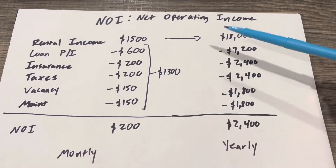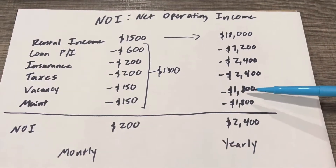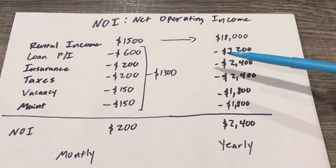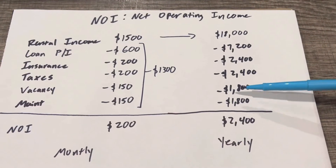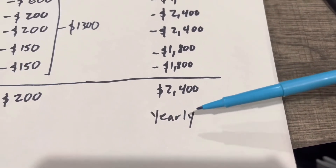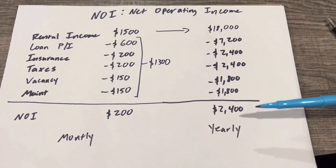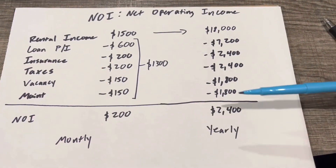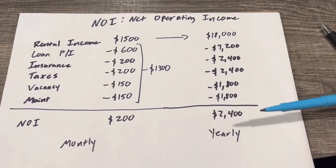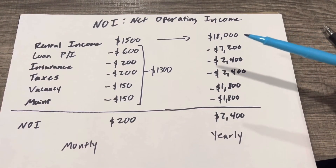So if we have a tenant move out and there are 30 days to get a new one in there, we're not panicking — we're covered, we budgeted for it. After two years, we have two months built up, which is really good. This means our NOI for the year is $2,400. This is going to be key when we start talking about return on investment, cap rate, yield, and all those exciting terms. But this is just a general blueprint of net operating income.